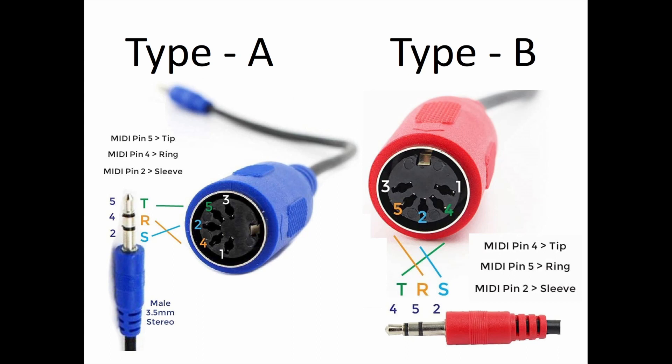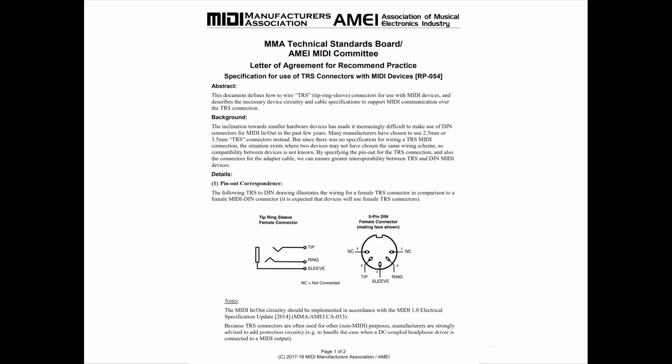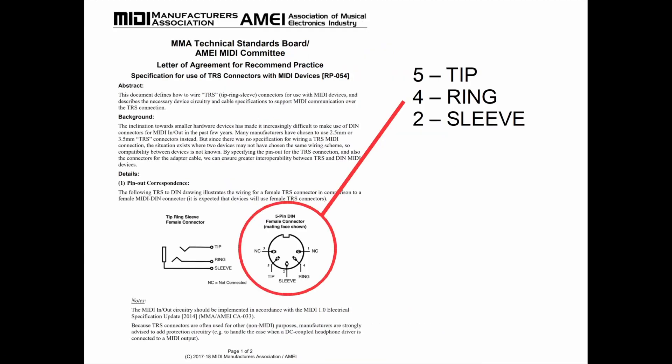So now you might be thinking: why do we have two different styles of cables, A's and B's? We have MIDI standards — why don't we have a standard for these tip ring sleeve MIDI adapters? Well, it turns out that we do. The MIDI Manufacturers Association has actually defined specifications for the use of tip ring sleeve connectors with MIDI devices. There actually is a standard, and if you look at the hookup — with pin five at the tip, four at the ring, and two at the sleeve — that conforms to type A. So the MIDI Manufacturers Association does define a MIDI TRS, and it's type A.